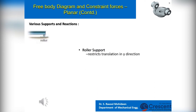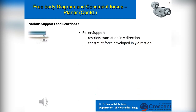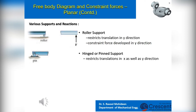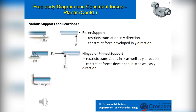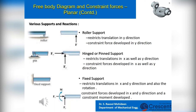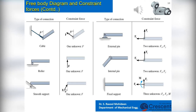A roller support restricts translation in the Y direction only; hence the constraint force is developed in the Y direction. A hinged or pinned support restricts translations in both X and Y directions; therefore, constraint forces are developed in X and Y directions. A fixed support restricts all movement — translations in X and Y and also rotation — so constraint forces are developed in X and Y directions and a constraint moment is developed around Z. The roller or smooth support has one constraint force, the pin support has two, and the rigid fixed support has two constraint forces and one moment.